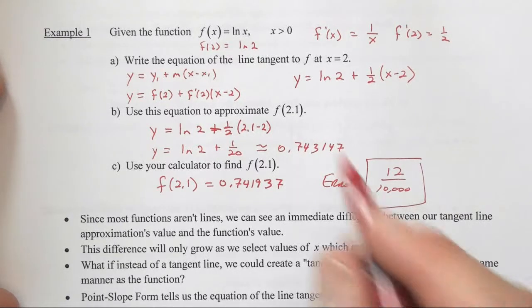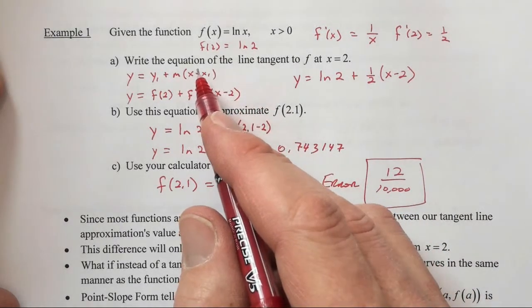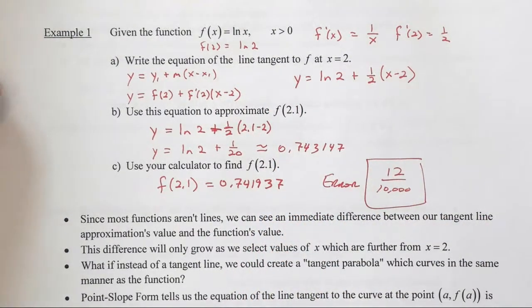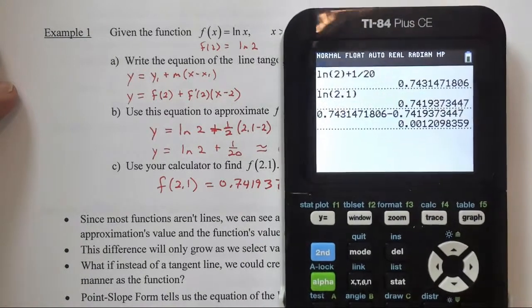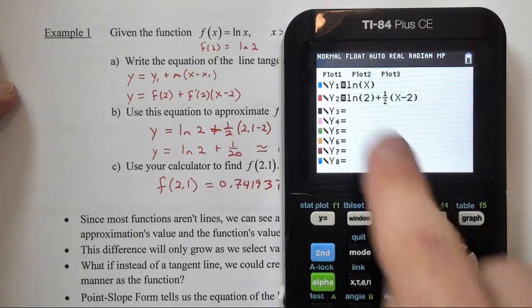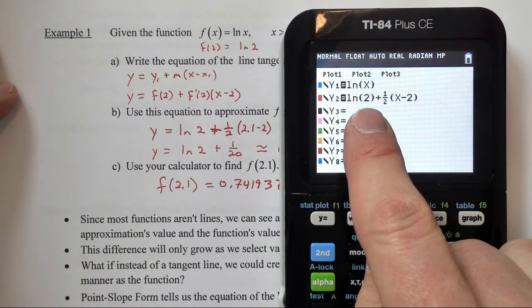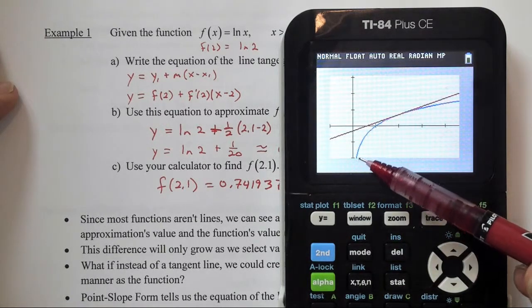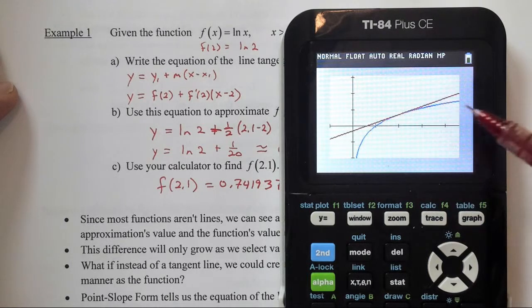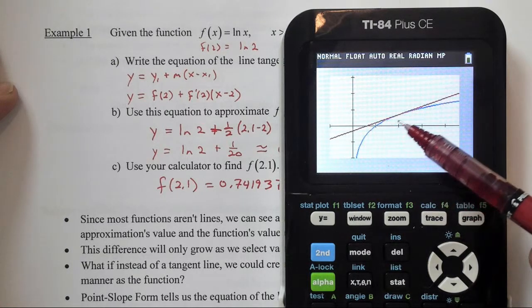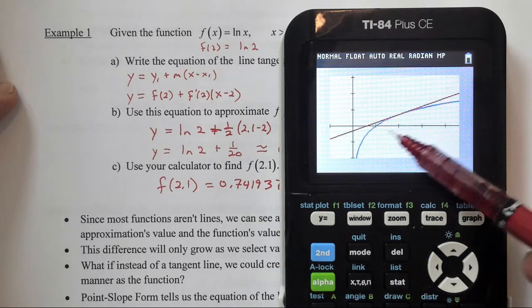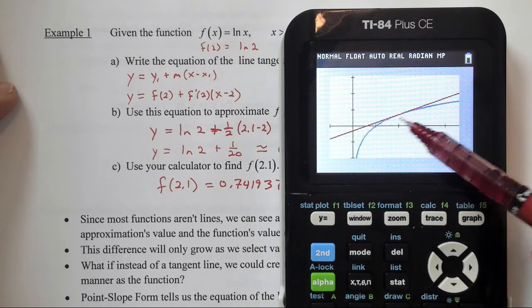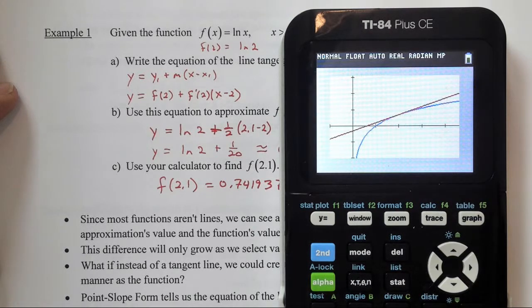All we did was we just found an equation of the tangent line and used that. So from a picture point of view, if we go back here, I've got the natural log of x, and then I've got the tangent line equation. If we look at the graph, we can see the ln x blue curve, and we can see the tangent line equation, and we can see that right around x equals 2, the two are extremely close together.